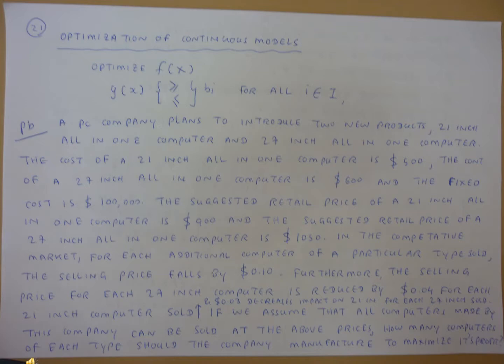The cost of the 27 inch all-in-one computer is $600, and the fixed cost is $100,000. The suggested retail price for a 21 inch all-in-one computer is $900.